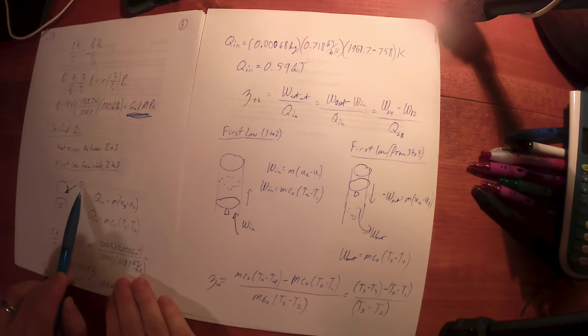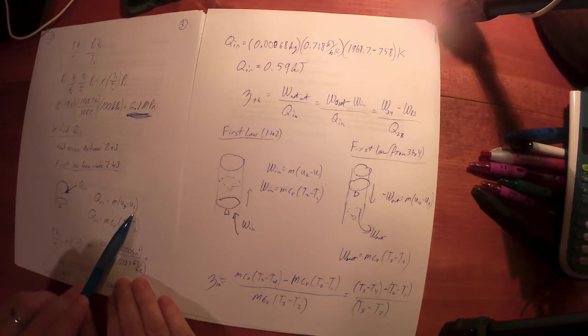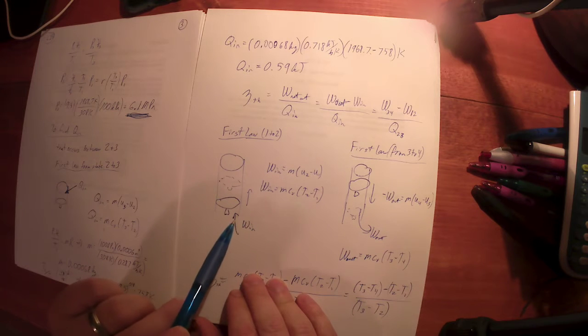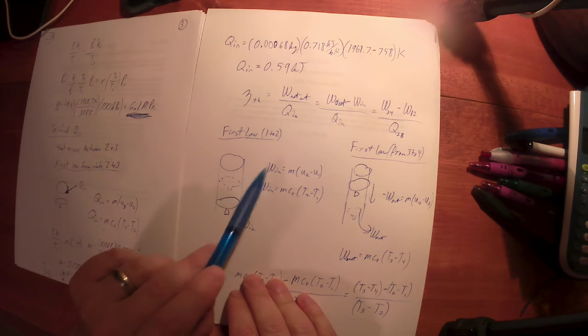Draw your piston. What's across the boundary? The heat, that's the only thing across the boundary from two to three, is the heat. That's equal to m delta u. Same thing here. The only thing that occurs between states one and two, there's no heat because it's isentropic and you're compressing, so it's work in.